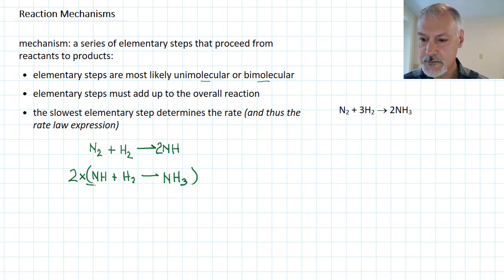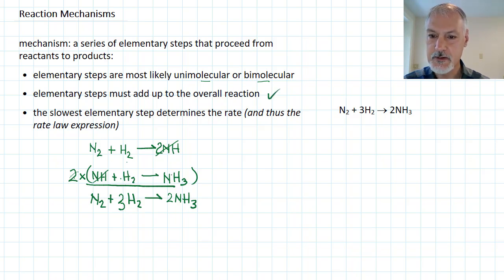Now, we check what the steps add up to. So if I sum up this, the 2NH will cancel with those two. And the overall process then would be two nitrogens. Two times this will give me one plus the one up there will give me three hydrogens. And the two times this will produce two ammonia. So I've met the second criteria, that the elementary steps must add up to the overall reaction.